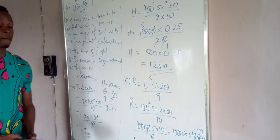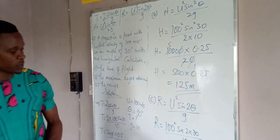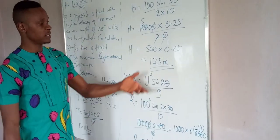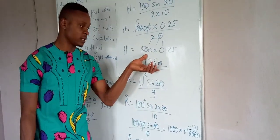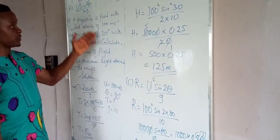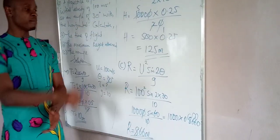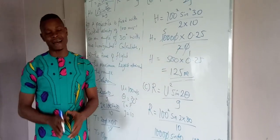This is the range. At this point, we have been able to obtain the time of flight, the maximum height the object projected will get to, and then the range, which is the maximum linear distance it will attain.